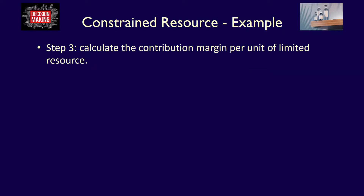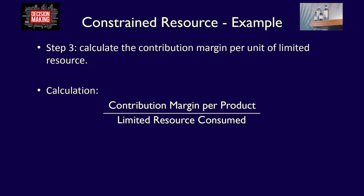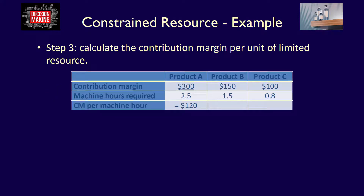Instead, what we need to do is calculate the contribution margin per unit of limited resource. Since the company will have only 1,600 additional machine hours, they should produce the product that has the highest contribution margin per unit of limited resource. It's calculated as the contribution margin per product divided by the limited resource consumed by each product during production. For product A: the contribution margin of $300 divided by 2.5 machine hours equals $120 per machine hour. This means that for every one hour of machine time, product A earns only $120.